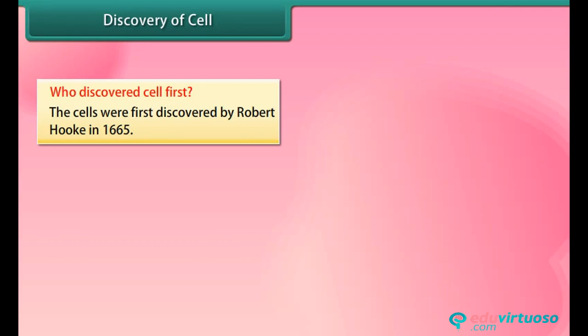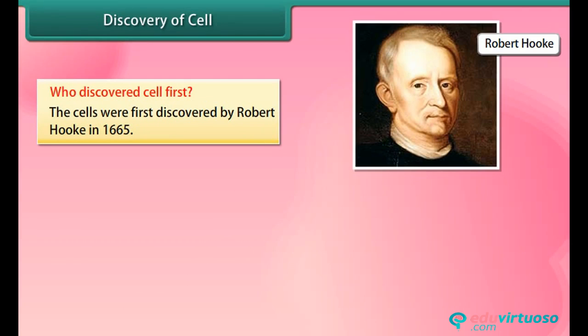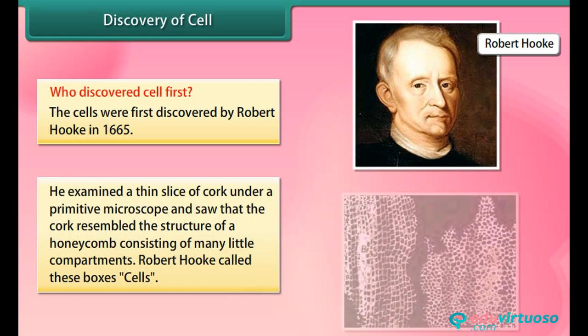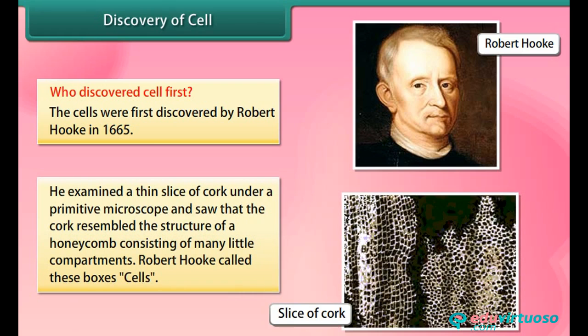Who discovered the cell first? Cells were first discovered by Robert Hooke in 1665. He examined a thin slice of cork under a primitive microscope and saw that the cork resembled the structure of a honeycomb consisting of many little compartments. Robert Hooke called these boxes 'cells'.